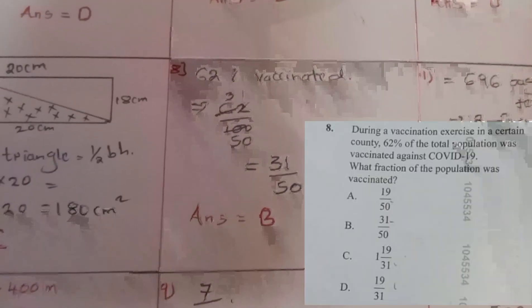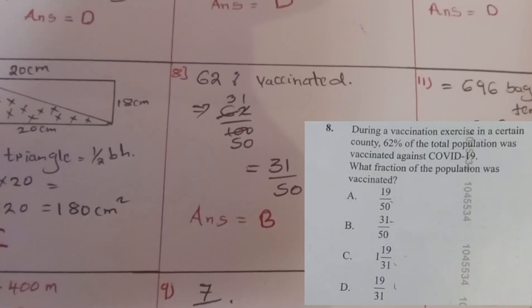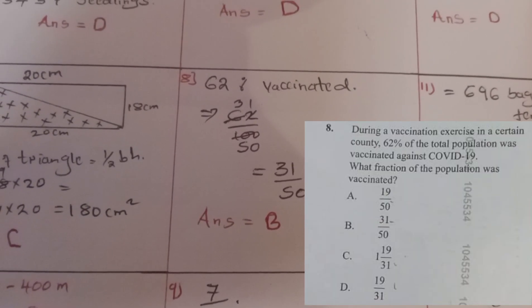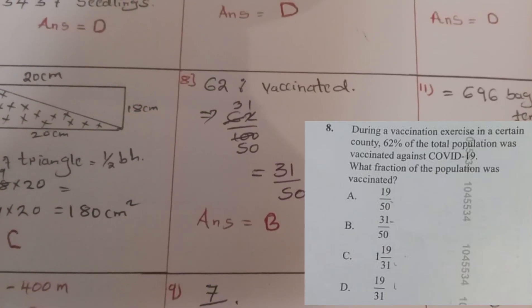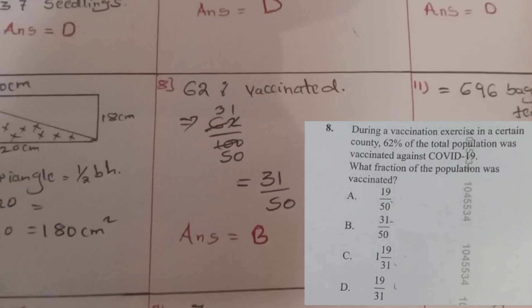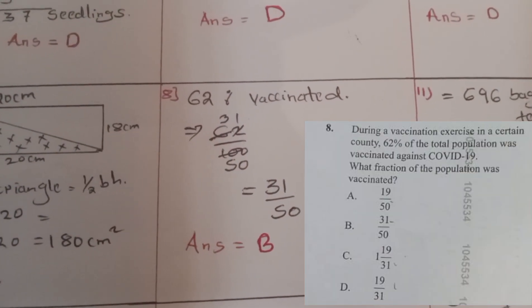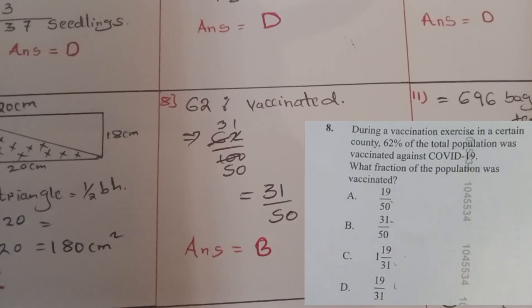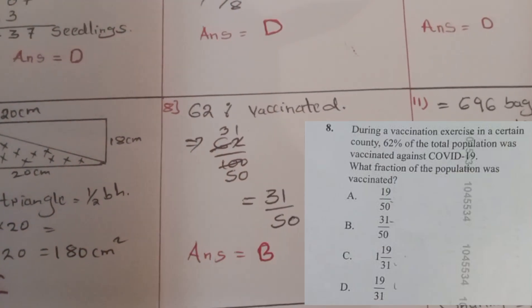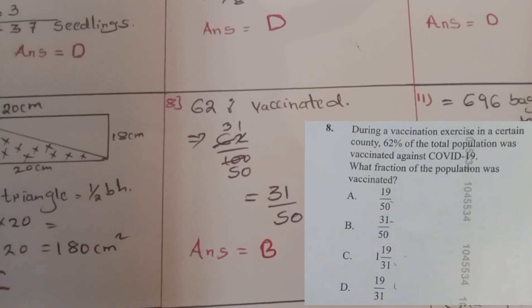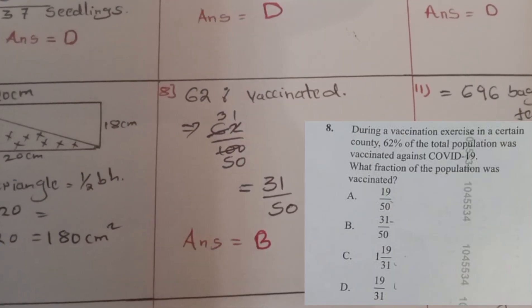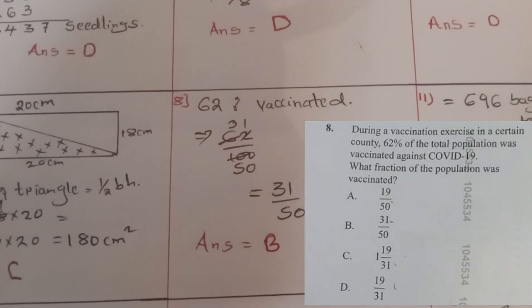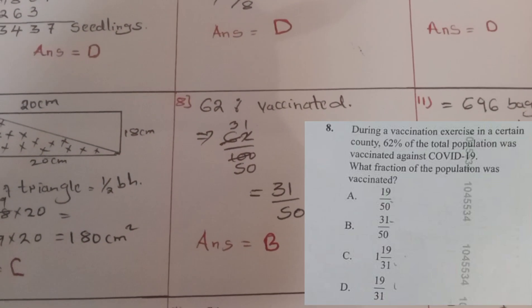Question eight: during a vaccination exercise in a certain county, 62 percent of the total population was vaccinated against COVID-19. What fraction of the population was vaccinated? We place 62 over 100, because any percentage is over 100. When you simplify it, you come up with 31 over 50 as a fraction. The answer was B — 31 over 50.